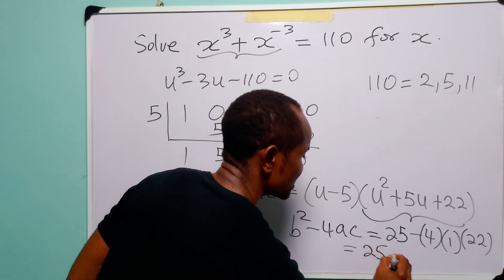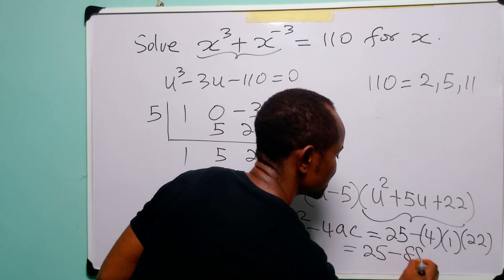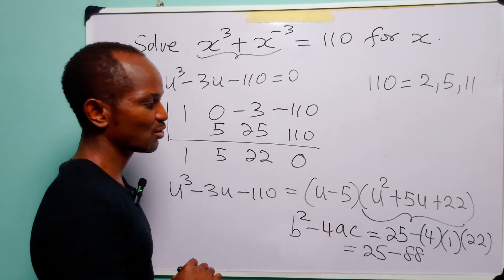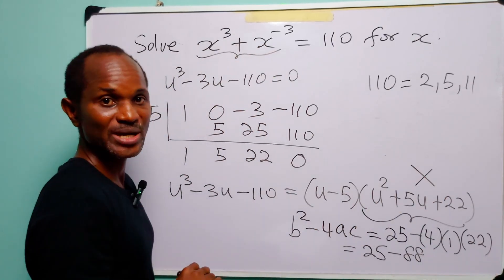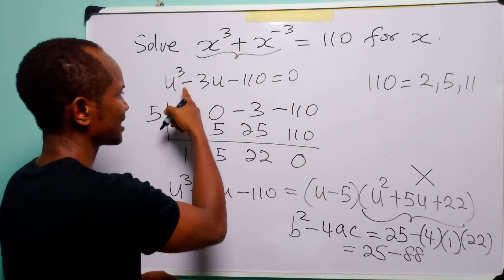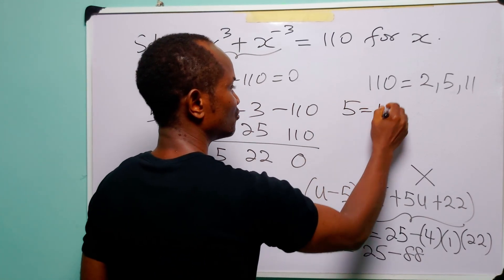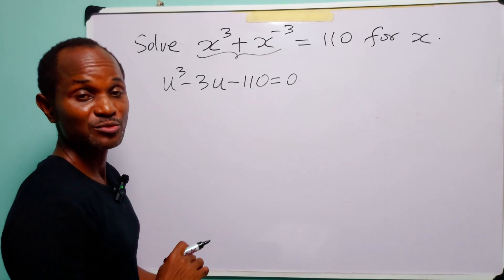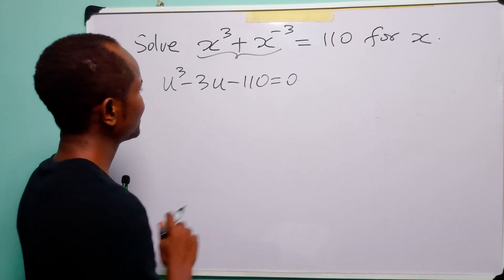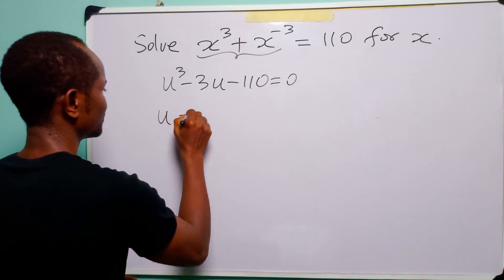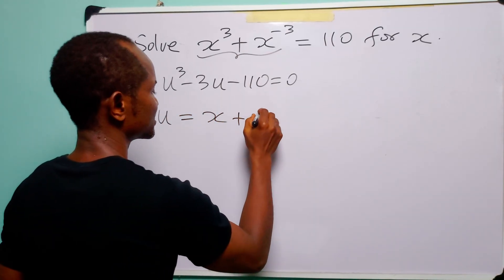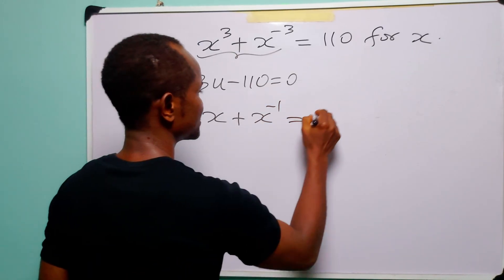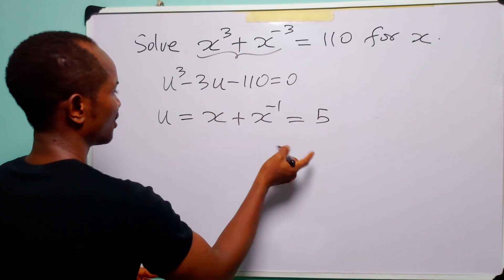Since 25 − 88 = −63, which is negative, the quadratic has no real roots. Therefore u = 5 is the only real solution. Recalling that u = x + x⁻¹, we have x + x⁻¹ = 5.